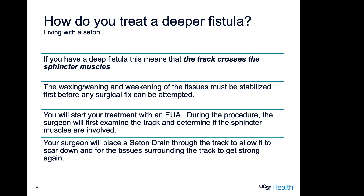Now let's move on to how we treat a deeper fistula, which means living with a seton. If you have a deep fistula, the track crosses those sphincter muscles, and the waxing and waning we talked about and the weakening of those tissues has to be stabilized before any surgical fix can be attempted. You're going to start your treatment with an EUA. During the procedure, the surgeon will examine the track and determine if the sphincter muscles are involved. If so, the first step is to stabilize those tissues by placing a seton drain through the track to allow it to scar down and for the surrounding tissue to get strong again.